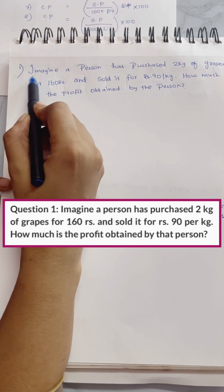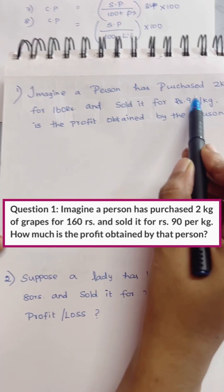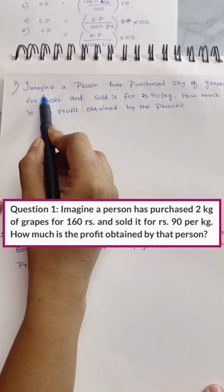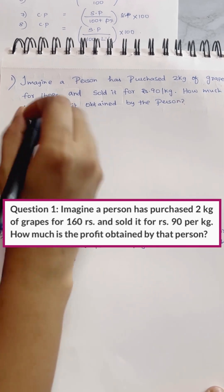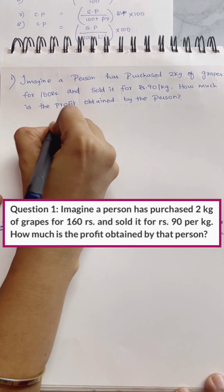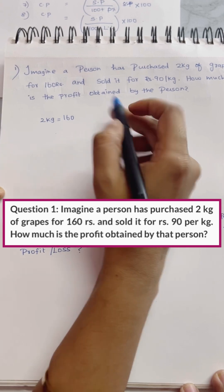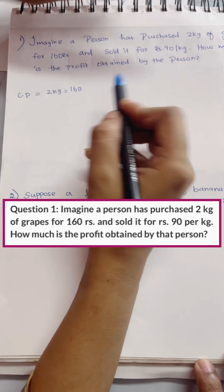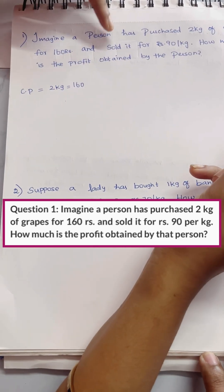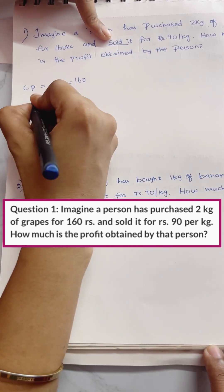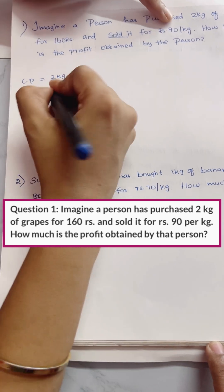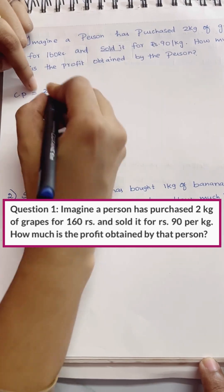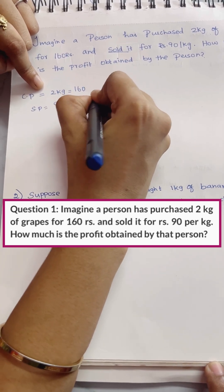Now we have a question. Imagine a person has purchased 2 kg of grapes for 160 rupees — that is the cost price. He sold them at 90 rupees per kg. So 1 kg is 90, multiply by 2, giving a selling price of 180 rupees.